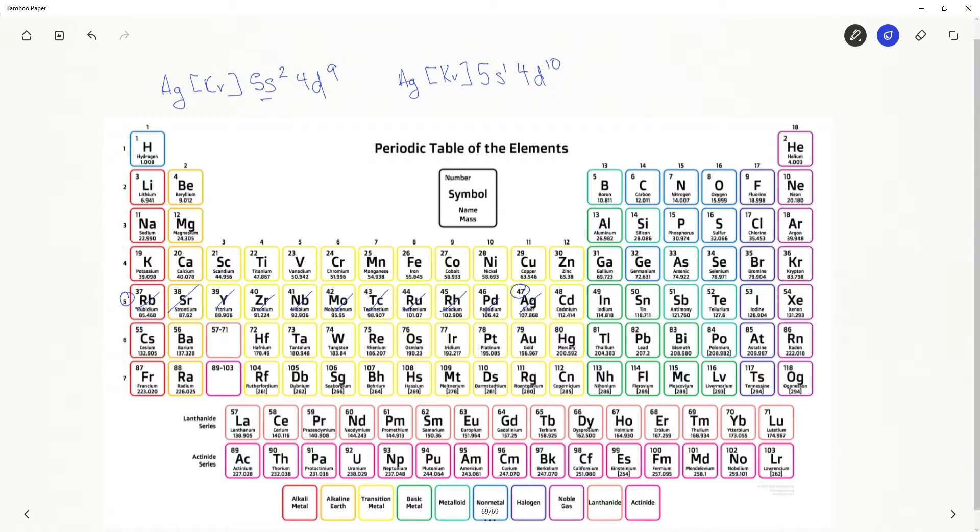Again, silver has promoted an electron from the 5s orbital to the 4d orbital. So this completes the 4d orbital. This is now full. And it makes the 5s half-full.